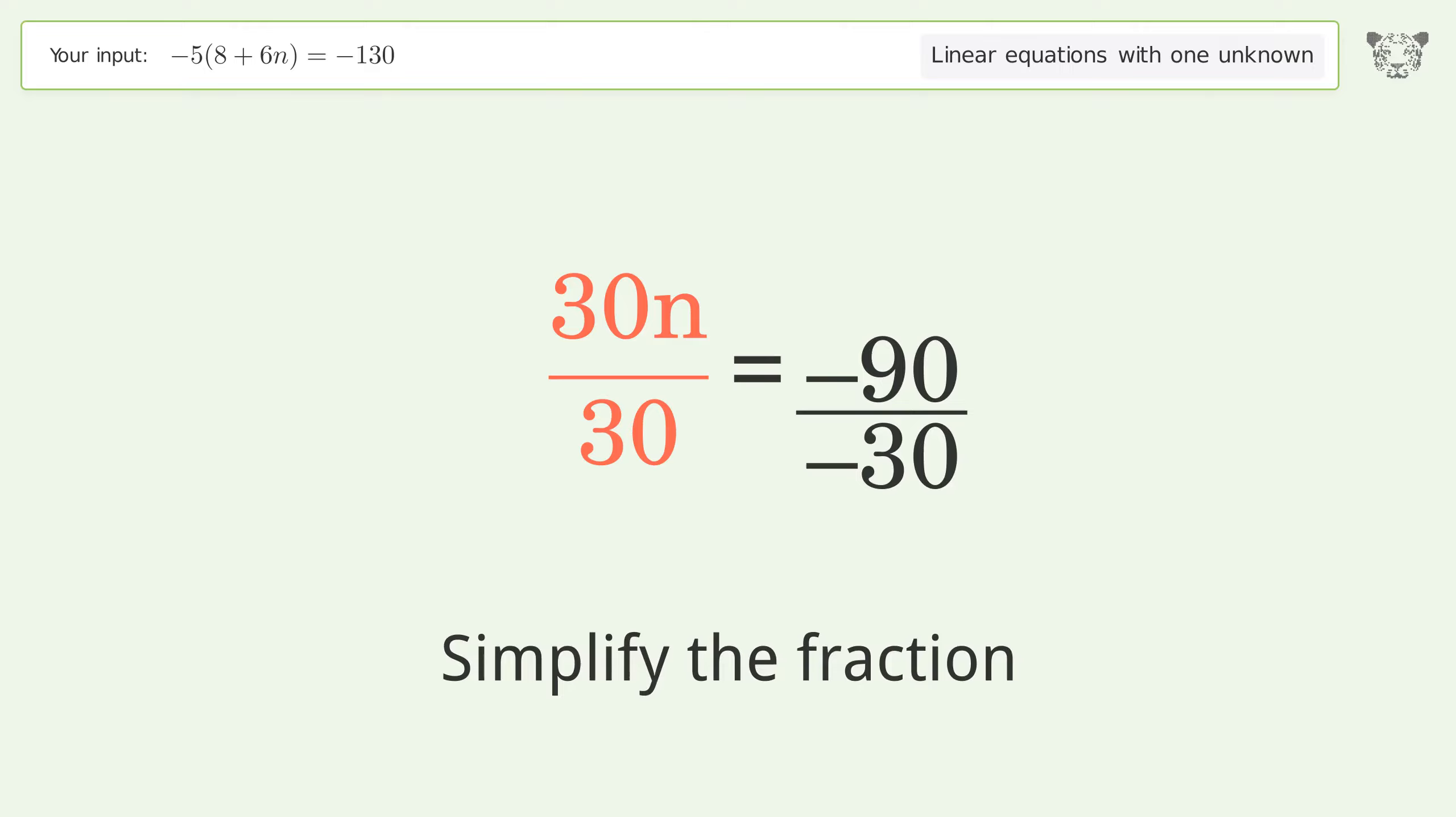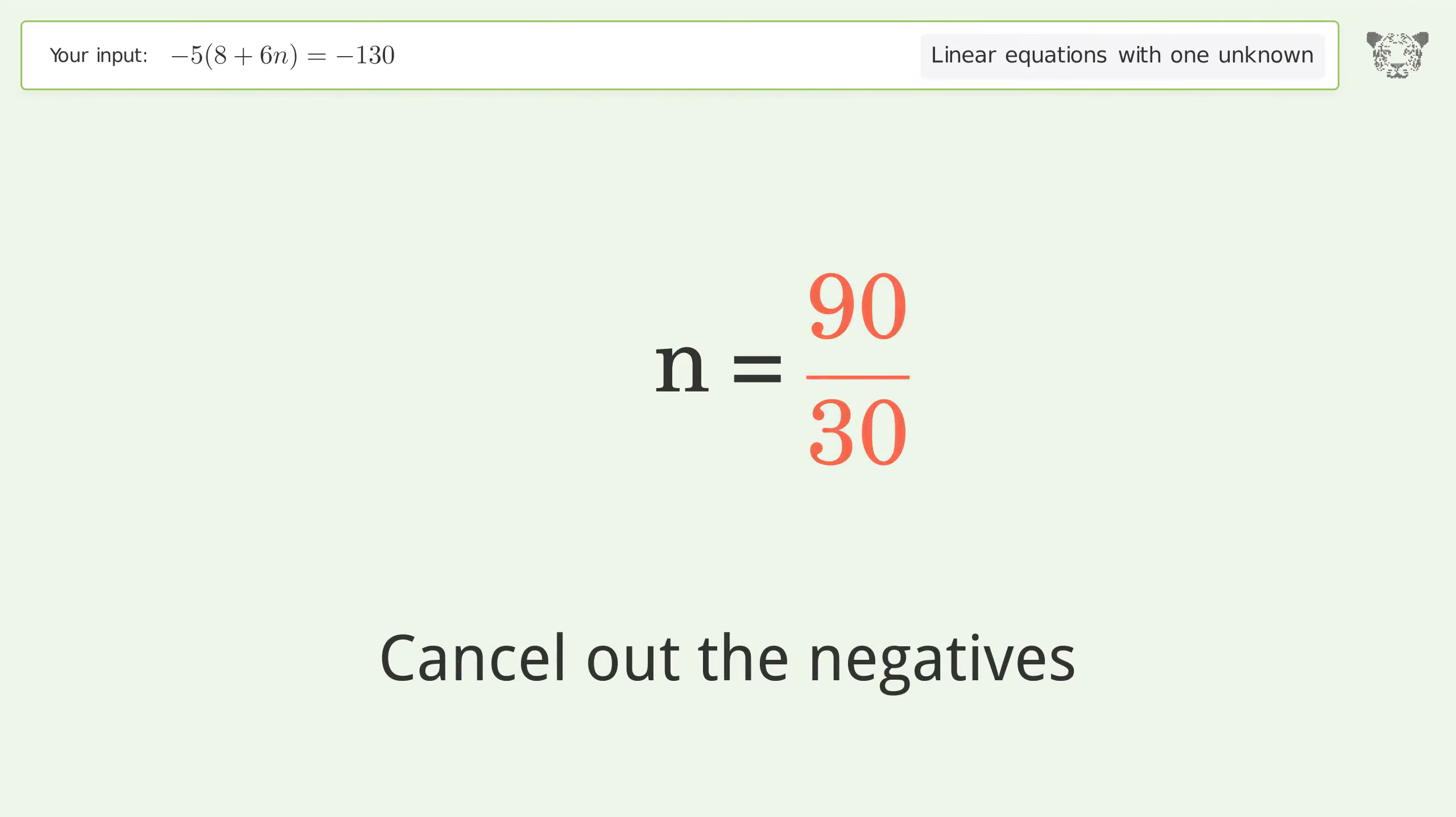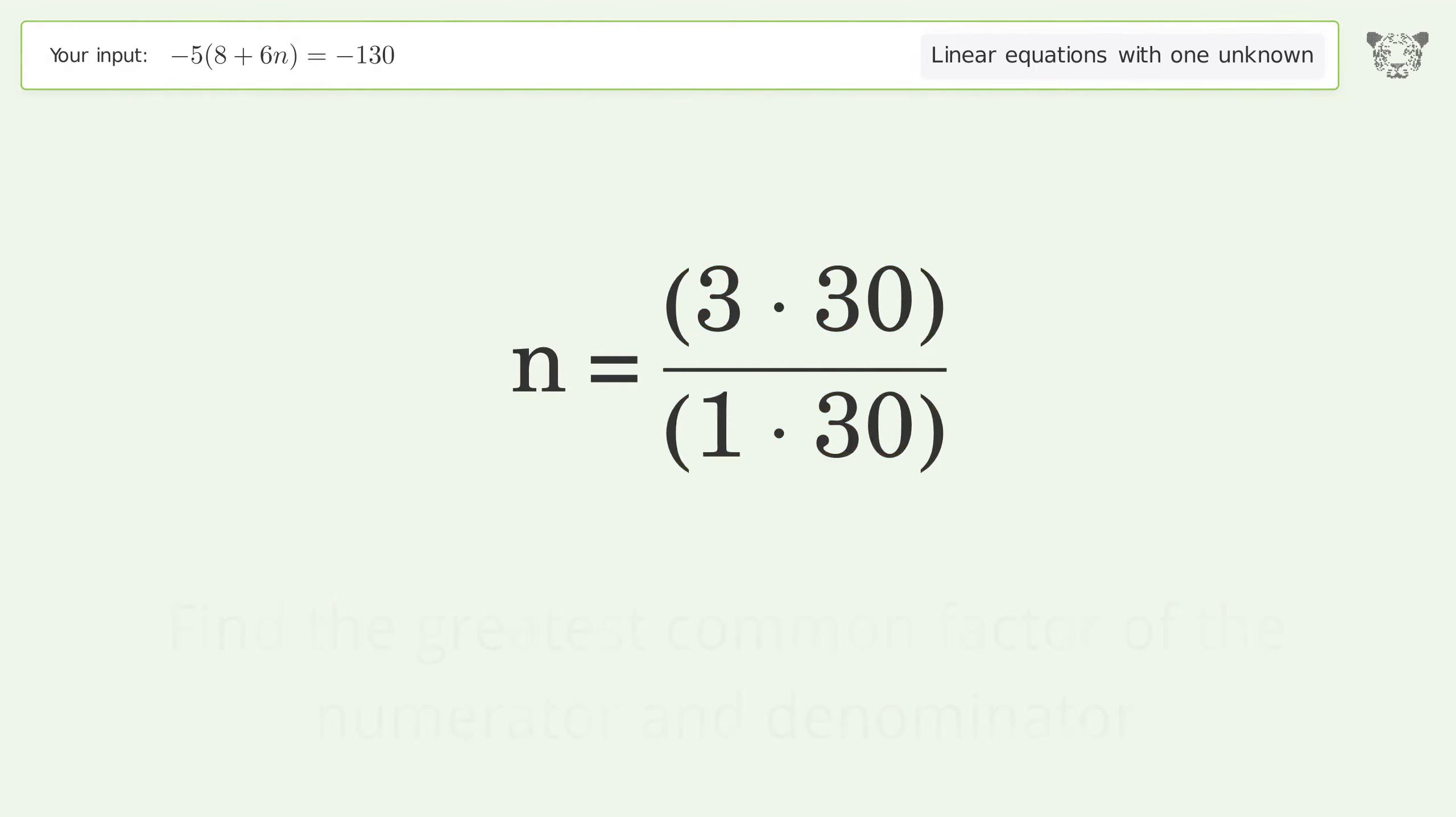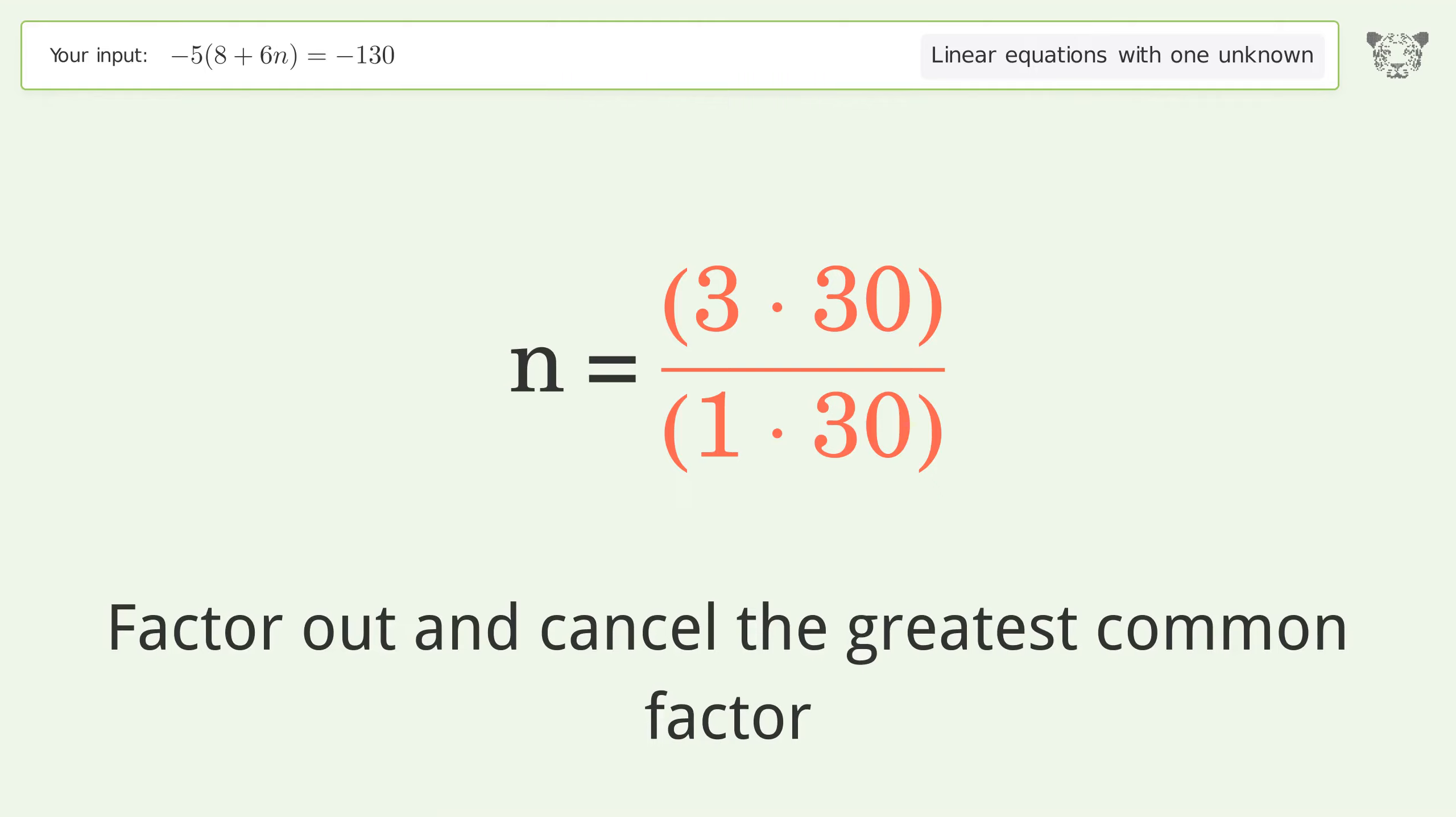Simplify the fraction. Cancel out the negatives. Find the greatest common factor of the numerator and denominator. Factor out and cancel the greatest common factor.